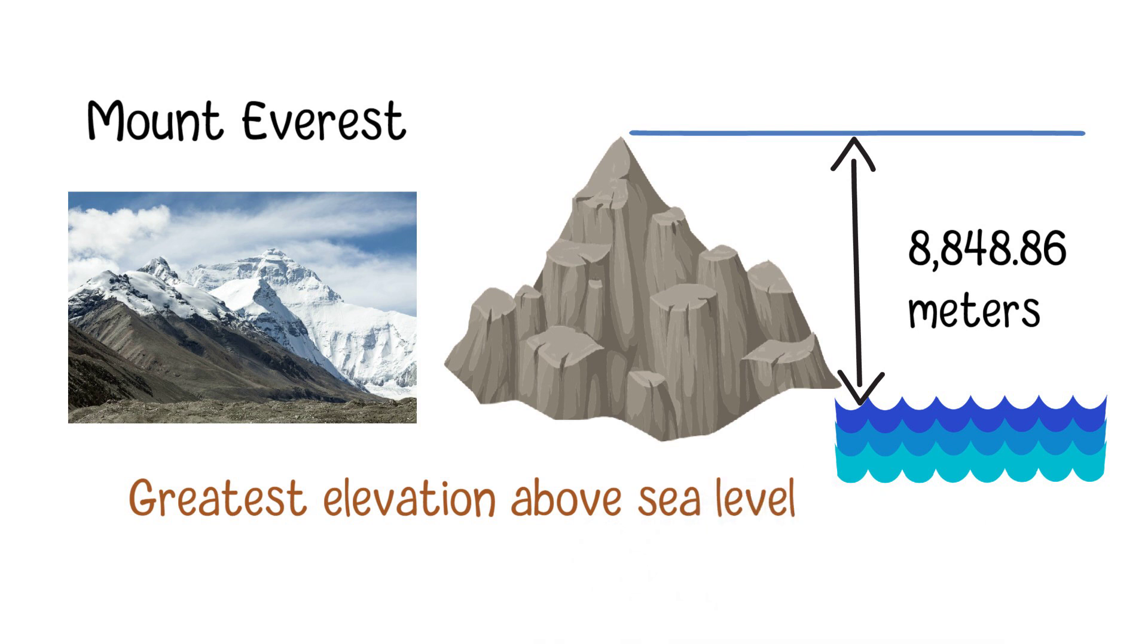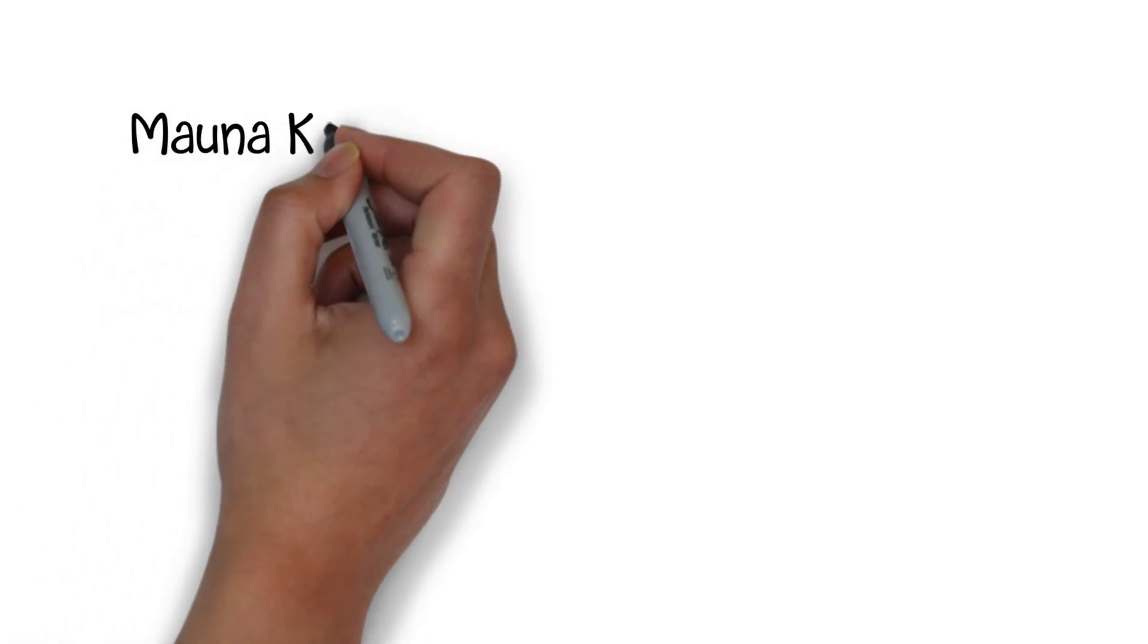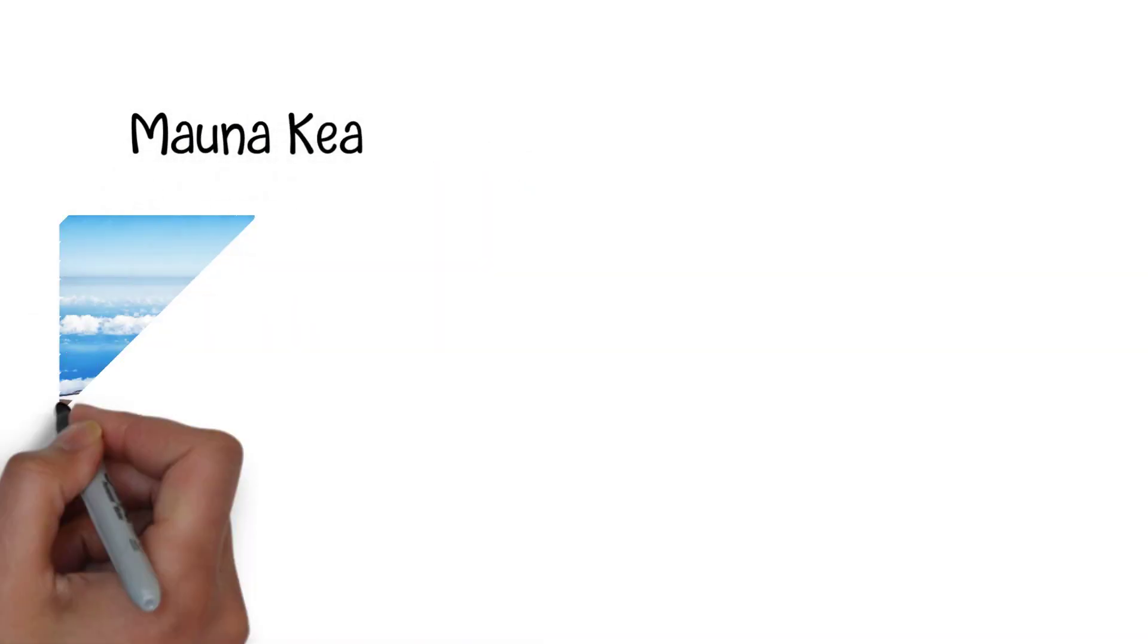Despite Mount Everest having a higher elevation above sea level, Mauna Kea, a volcano located on the Big Island of Hawaii, is often considered to be taller than Mount Everest when measuring from base to summit.